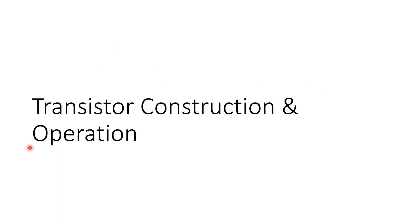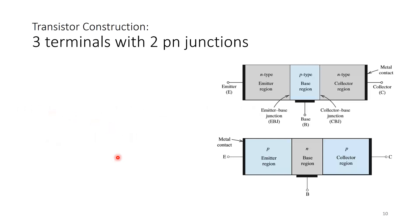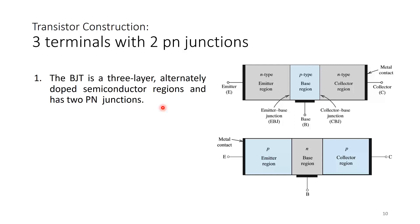We are now leaving the introduction and will look at BJT construction and operation. We mentioned three terminals with two PN junctions. The BJT is a three-layer alternately doped semiconductor region with two PN junctions. You have emitter, base, and collector.